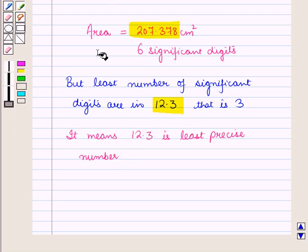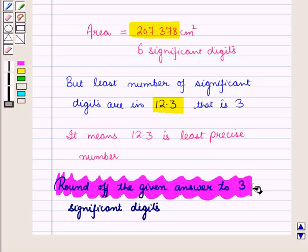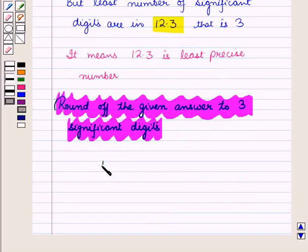So our answer should also contain 3 significant digits so that it should be no more precise than the least precise measurement. So round up the given answer to 3 significant digits. So we have area is equal to 207 centimeters square. Now here we have rounded it off to 3 significant digits.